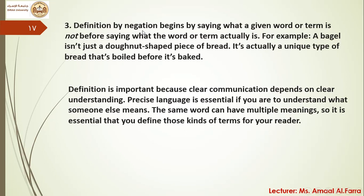Number three: definition by negation uses 'not' to define. For example: 'A bagel isn't just a donut-shaped piece of bread. It's actually a unique type of bread that's boiled before it's baked.' Definition is important because it clears communication, and precise language is essential — the same word can have multiple meanings in English, so the writer has to define these kinds of terms for the readers.